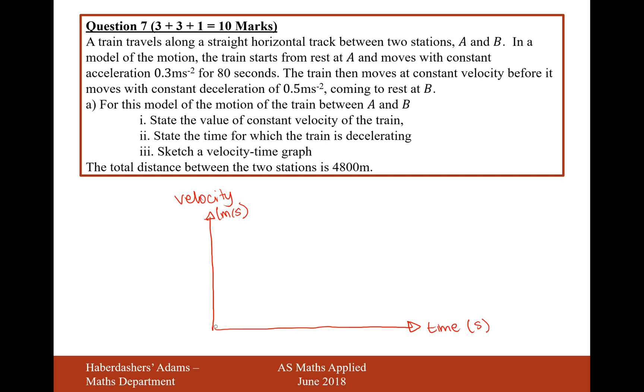Now it starts from rest and it accelerates at 0.3 metres per second squared for 80 seconds. So that's going to be 80 seconds. And now we need to work out what the velocity is going to be of the train here. So if it's travelling for 80 seconds and it's increasing its speed by 0.3 metres per second every second, then the calculation there is going to be 80 times 0.3, which is equal to 24. So it's going to be 24 metres per second there.